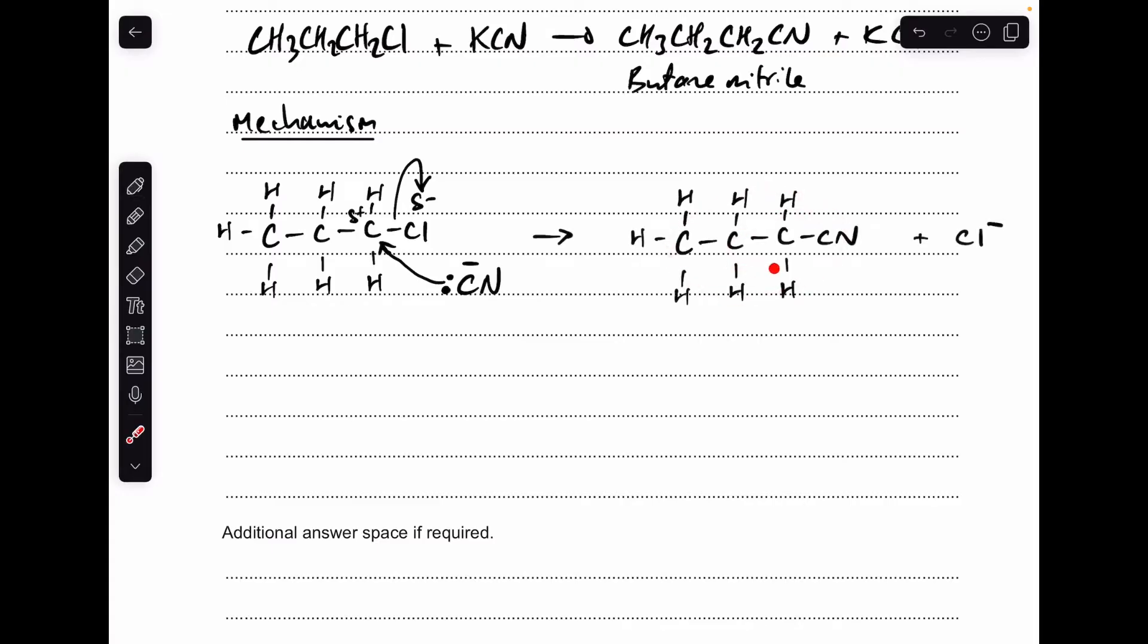So there's the organic product, the butane nitrile, and there's that carbon-carbon bond that's been formed. You'll notice I haven't shown the triple bond between the carbon and the nitrogen there. Some of you might have drawn the full triple bond, which is absolutely fine as well. The chlorine, when it breaks off, is a chloride ion. So that's the mechanism there.